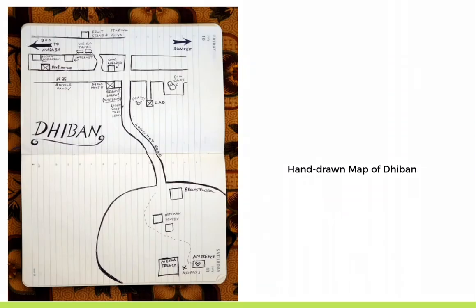This is a map of Diban, an Iron Age tell in Jordan where I spent a couple of summers excavating. The map is back to front, with north on the bottom, only indicated by the direction of a sunset. The distances are inaccurate, but it describes some of the sensorial delights of walking up a very steep hill in 40-degree heat. You see the annotation of the goats, the bicycle game, being stared at a fruit stand by men. This map shows an experience of a space that we inhabited while excavating in Diban.